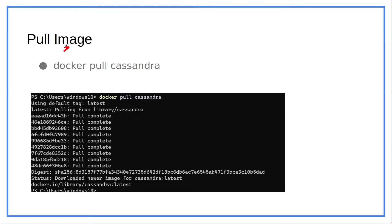The first step is to pull the image. To pull the image, we will utilize the command `docker pull cassandra`. Here, Cassandra is the name of the image that we are required to pull. The output of this command will look something like this. Now let's go to the terminal and perform step one.